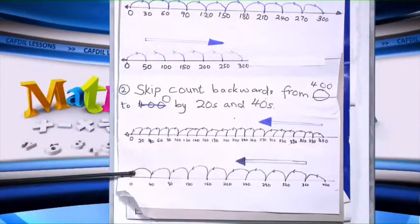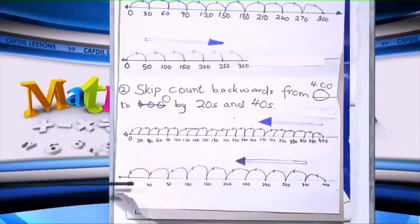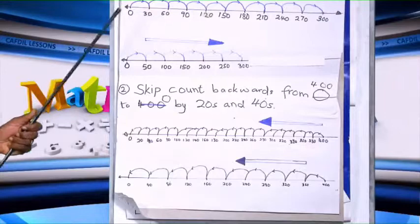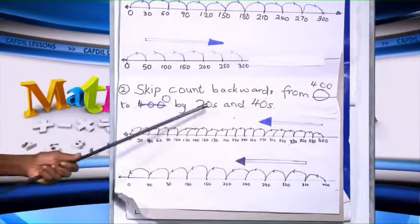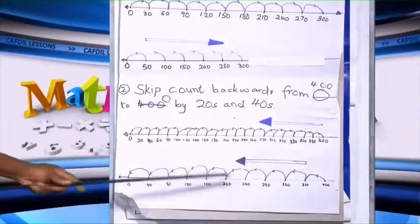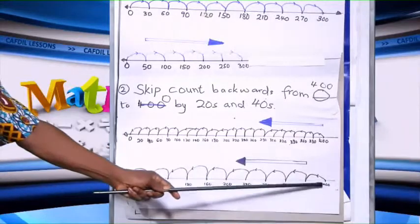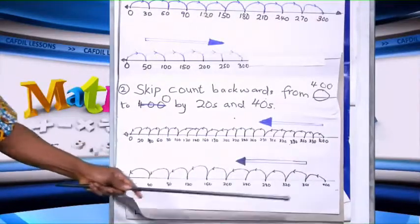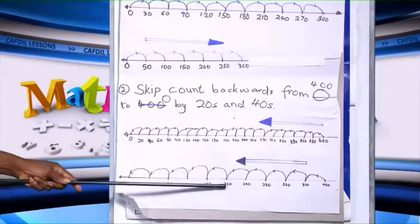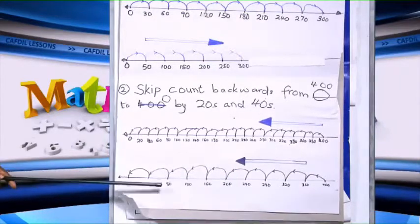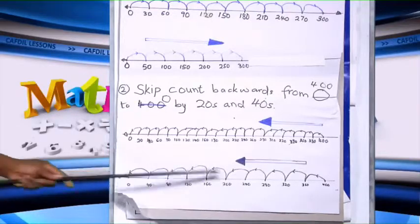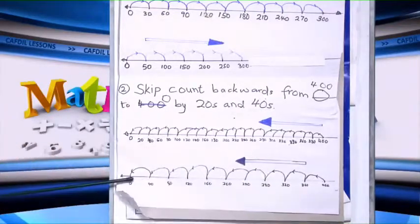Then we have number 2B: 400 to 0 by 40s backwards. So we start from 400: 360, 320, 280, 240, 200, 160, 120, 80, 40, and then 0. So this is what you should draw.